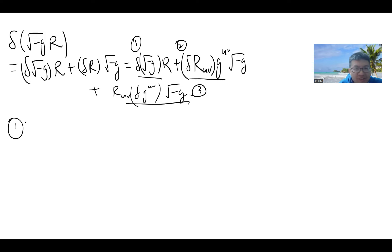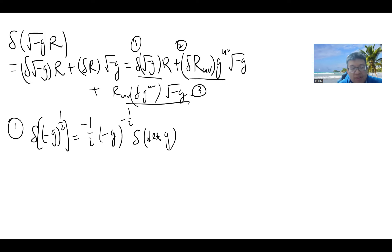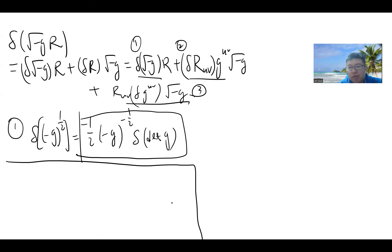Let's do term one. By the chain rule, the variation of √(−g) is: δ√(−g) = ½ (−g)^{−½} × (−1) × δ(det g). We now need a simple fact about determinants of matrices.